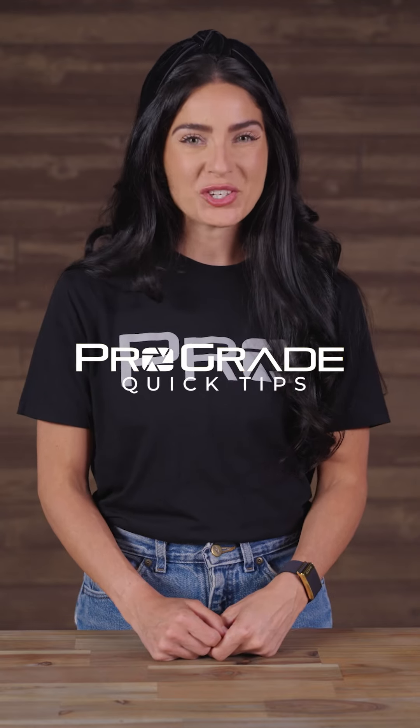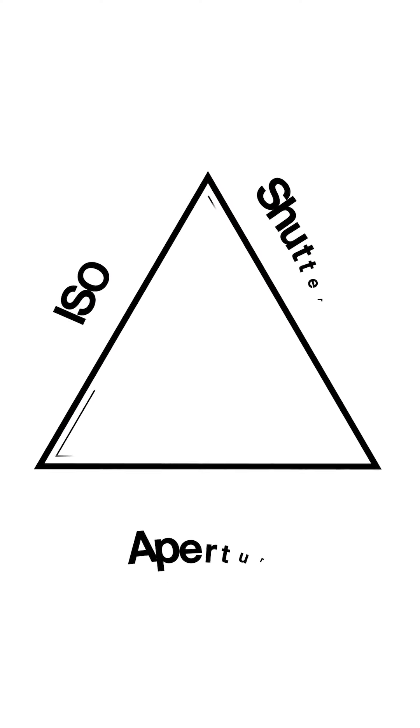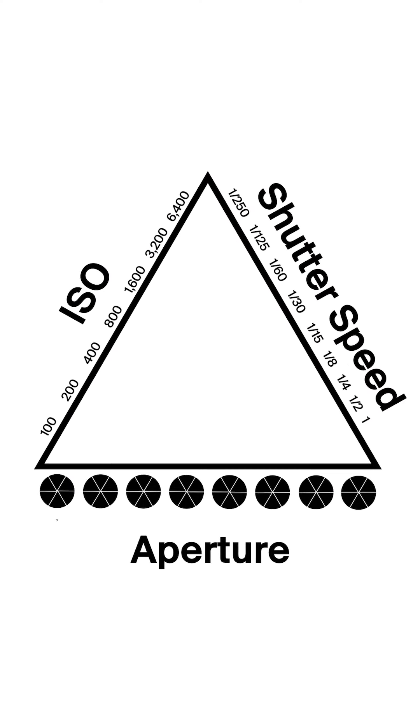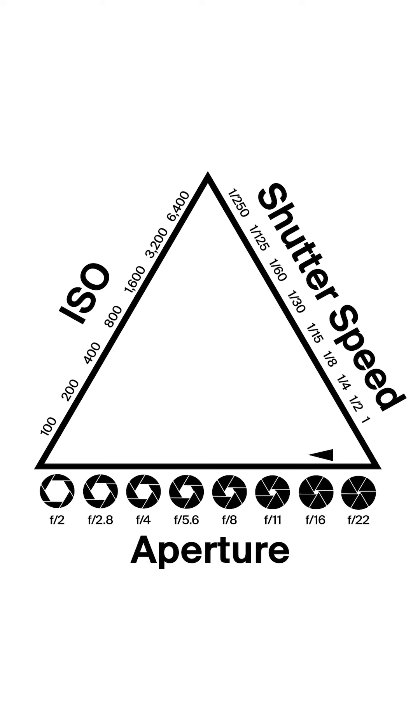Quick tip: the exposure triangle. The exposure triangle is a visual representation of three key elements that determine the amount of light that will reach your camera's sensor — ISO, aperture, and shutter speed.